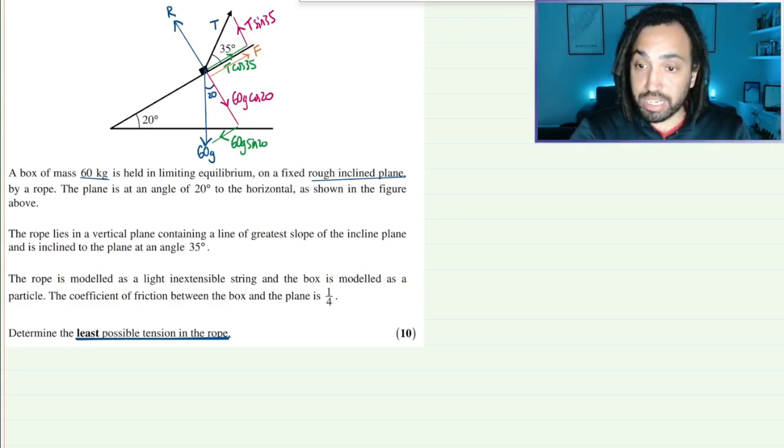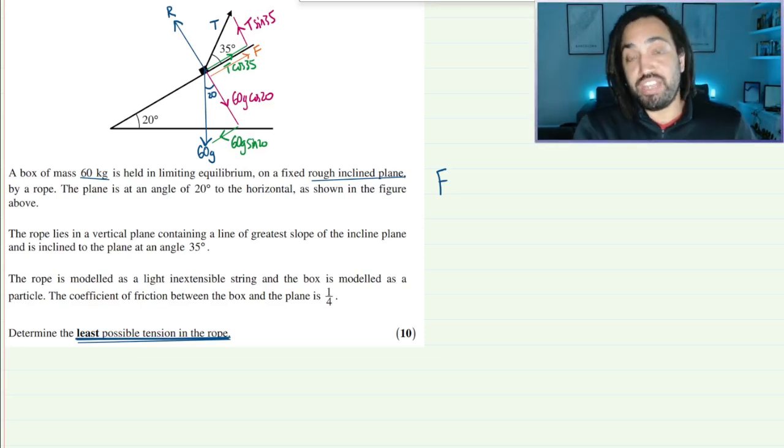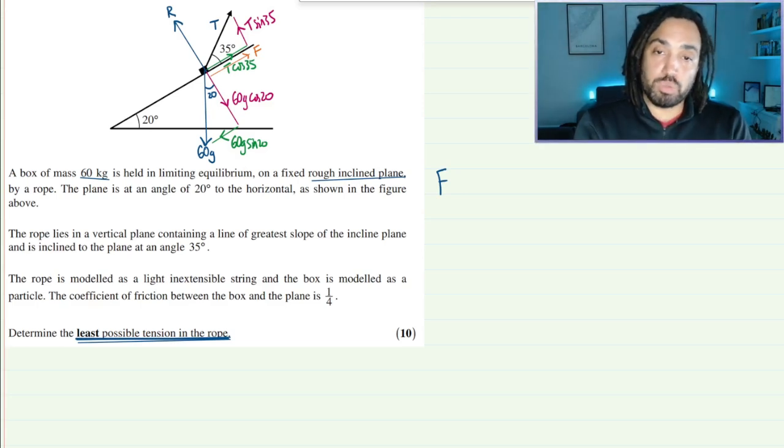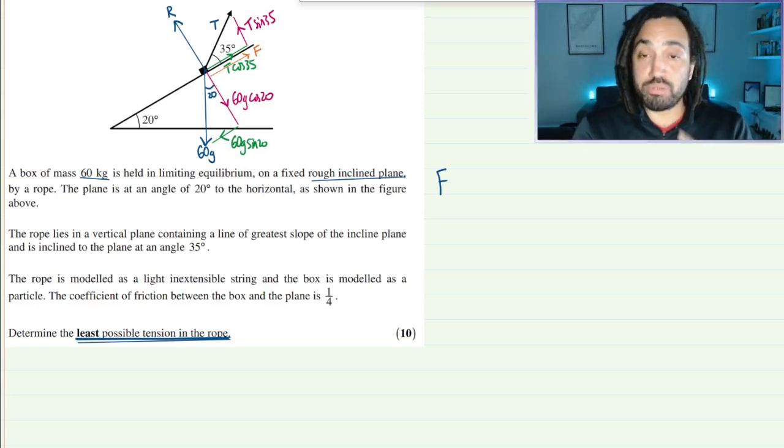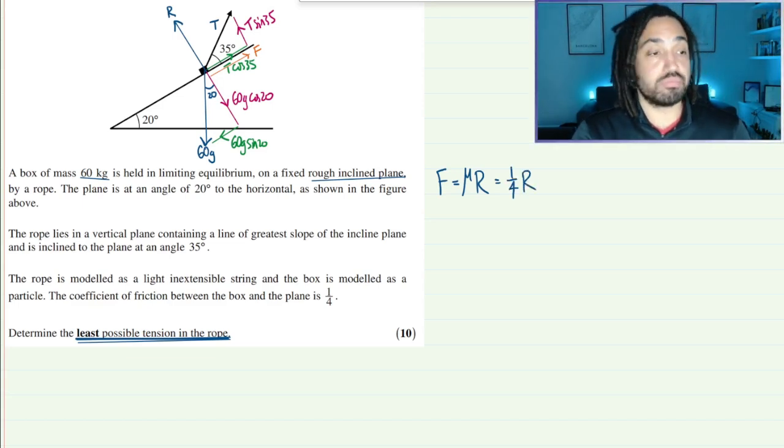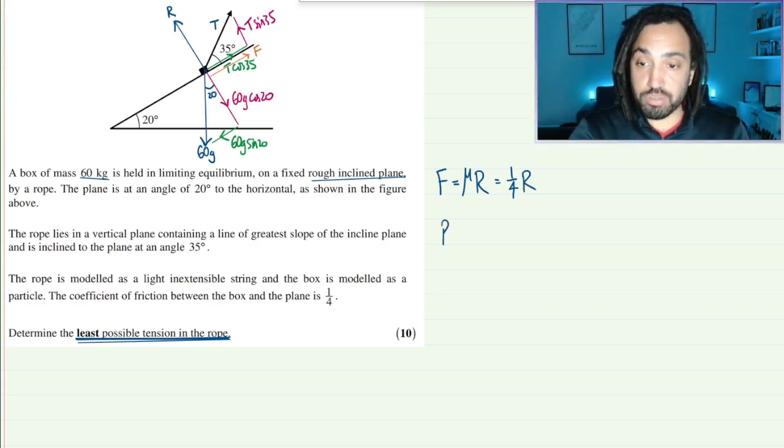Right, let's get cracking. So we know that we are looking for the least possible tension in the rope. Now that happens when the frictional force is at its maximum. Because we want the smallest tension as possible so we want friction to be doing as much work as possible. And that happens when friction is equal to mu times by R. So in this case that is one quarter times by R. Now what we're going to do is we're going to look at parallel to the slope and we're also going to look at perpendicular to the slope.